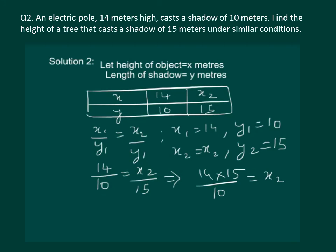On solving this we can get 5 threes of 15, 5 twos of 10, then 2 sevens of 14, which implies we get x2 as 21 and which is the required answer. That means the height of the tree is 21 meters.